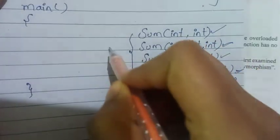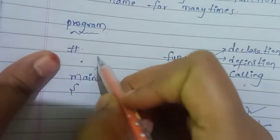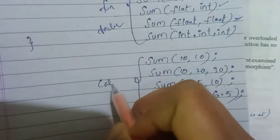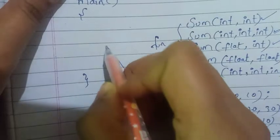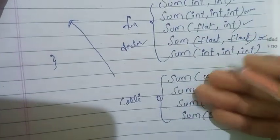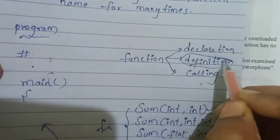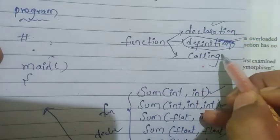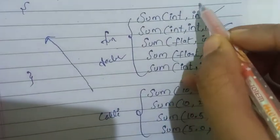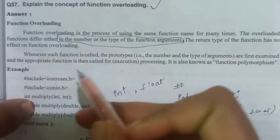So, the steps are: function declaration, then the main function with the calling, and then the function definition. The definition comes after the declaration, and the calling is inside the main function. This is the main difference in the calling process.